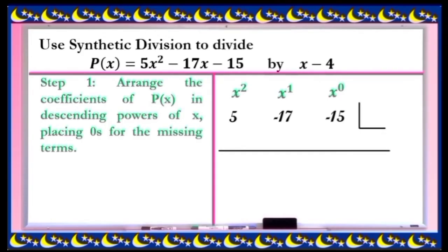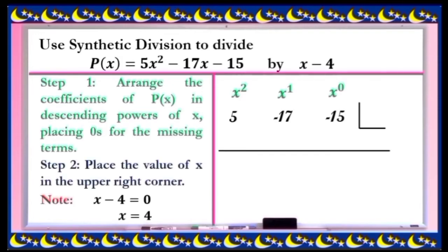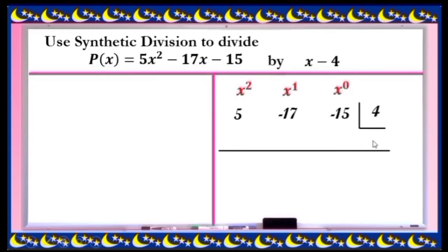Our divisor is x - 4. For Step 2, place the value of x in the upper right corner. To solve for the value of x, equate the divisor to 0. Therefore, the value of x is equal to 4.